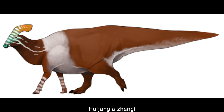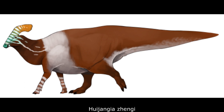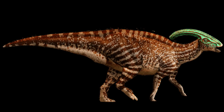Hadrosaurs were also present at the Turpan Basin site. The largest and most impressive of these was the massive lambeosaurine Huijangia jengai. A close relative of Charonosaurus and Parasaurolophus, only larger at 13 meters long, it was the largest animal in late Paleocene Asia.